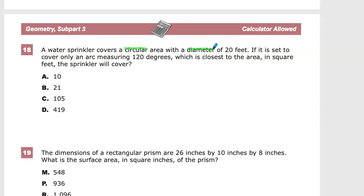In this case, they're giving you a diameter. That will be important as we move forward, because if you think it's radius, you'll go immediately into the wrong thing, so be aware. If it is set to cover only an arc measuring 120 degrees, what is the closest to the area in square feet the sprinkler will cover?